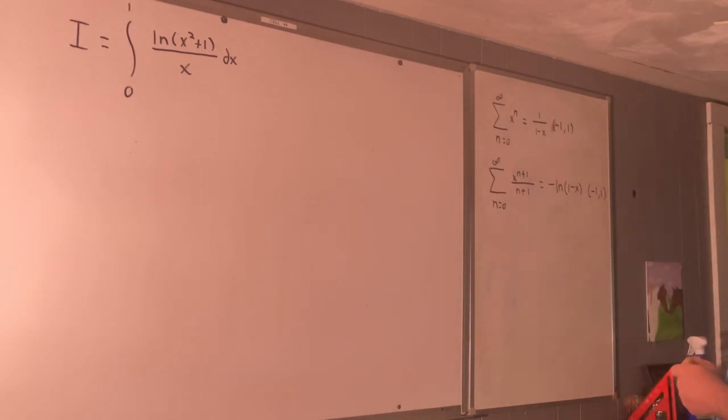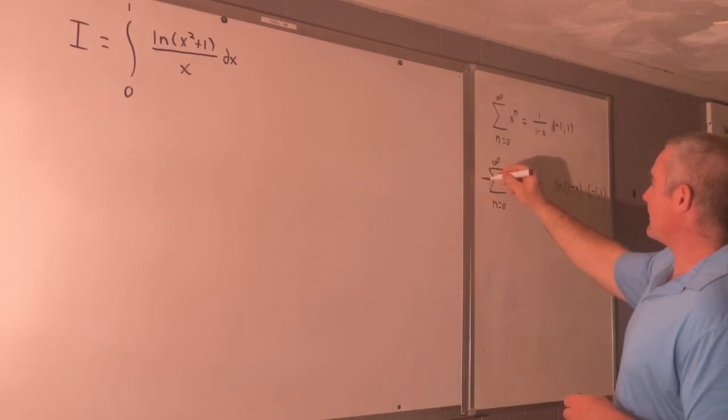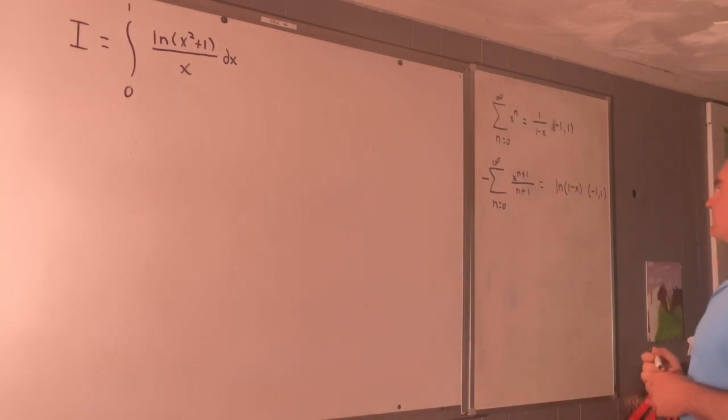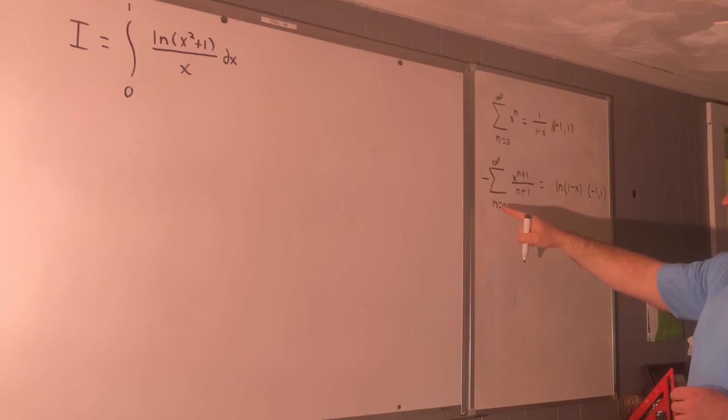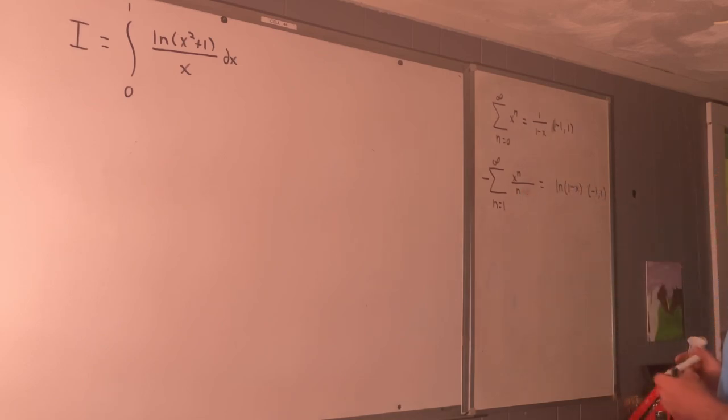Well I guess now we can just bring this negative sign over here. Let's add 1 to our index and subtract 1 from all our n's. So we have n going from 1 to infinity now of x to the n over n. So that's true.